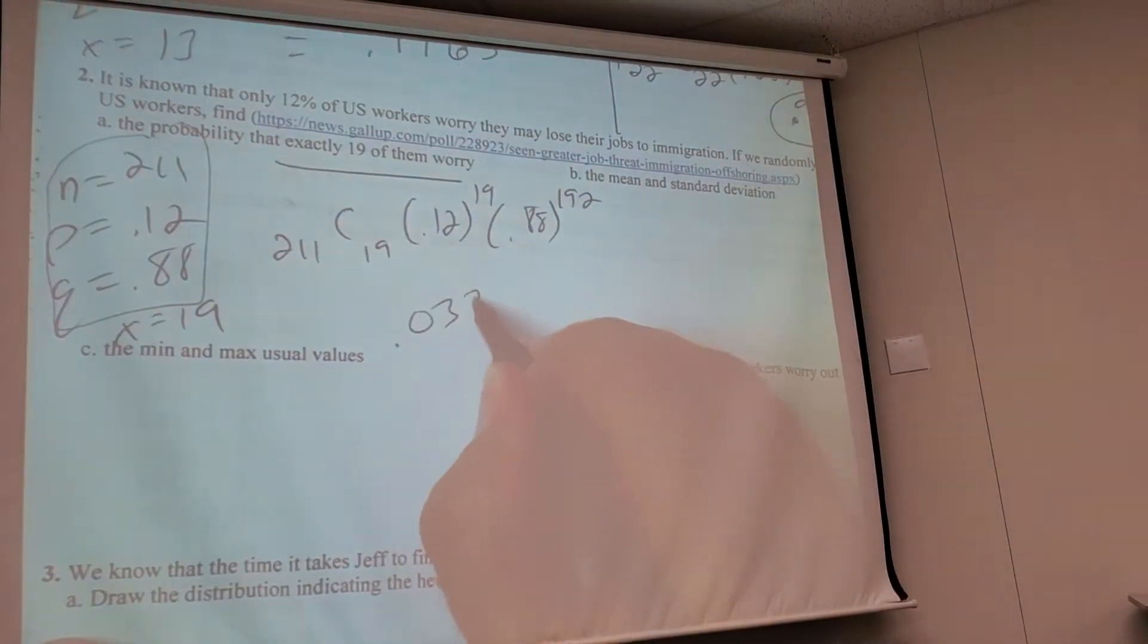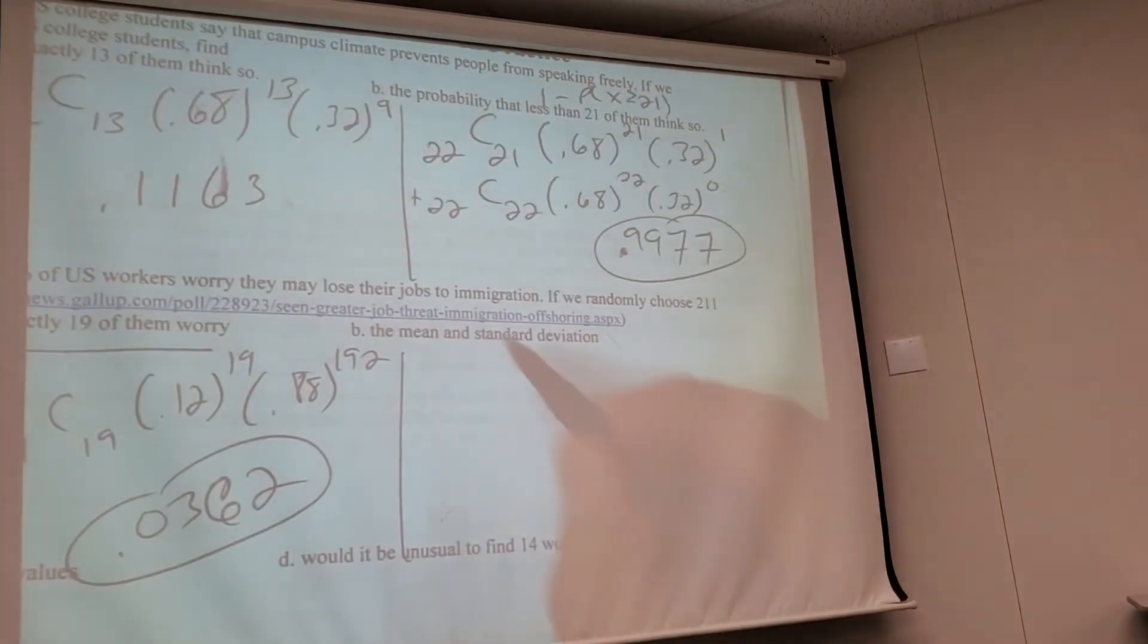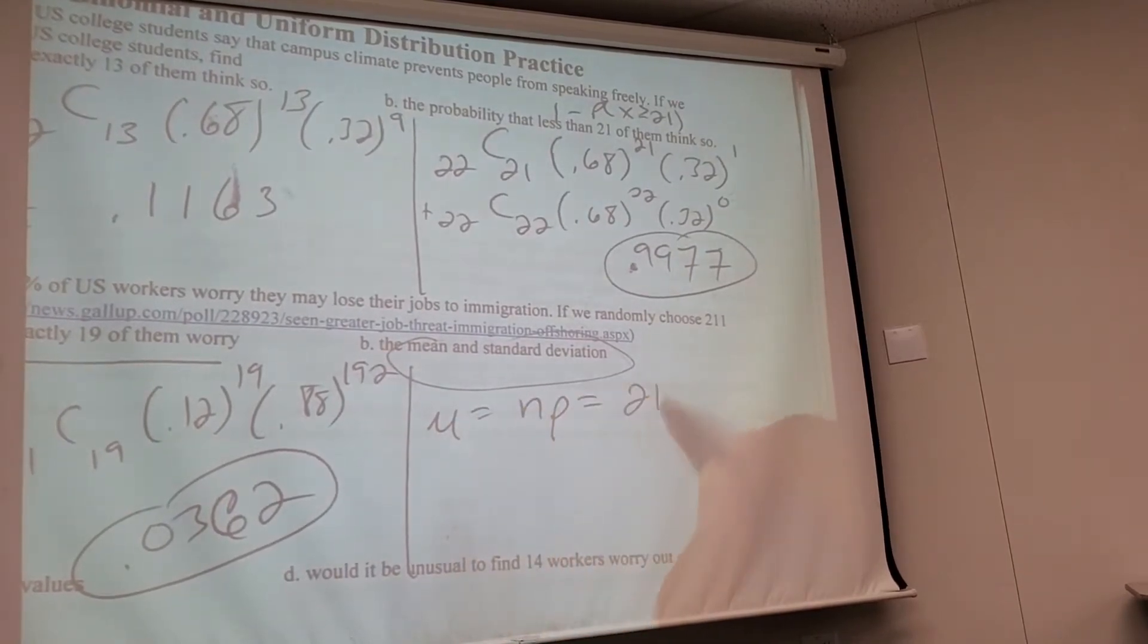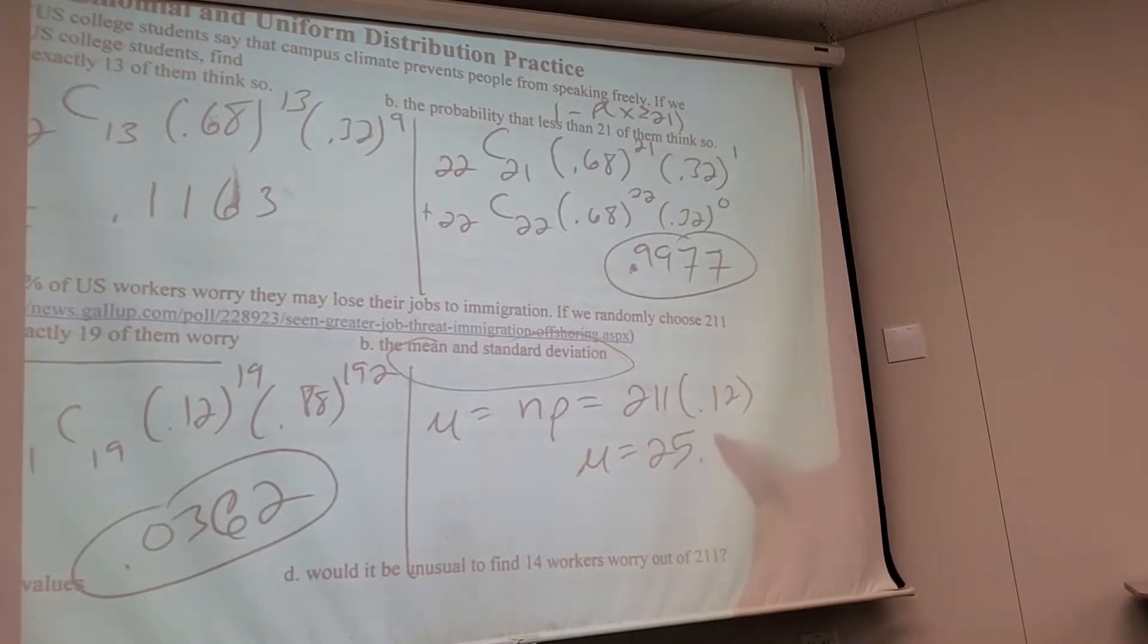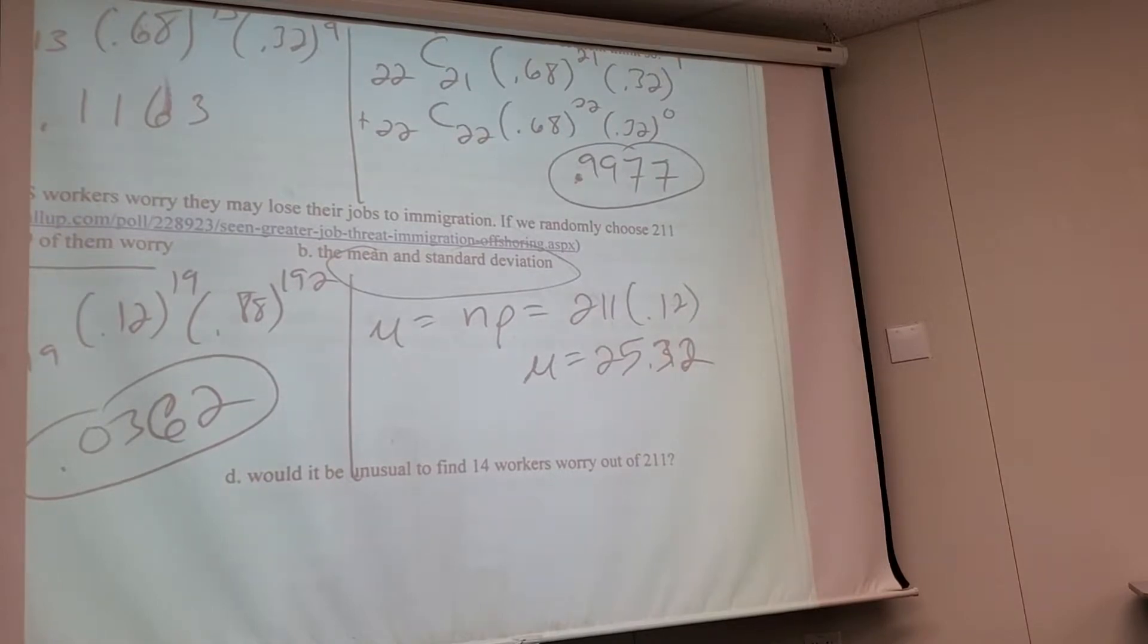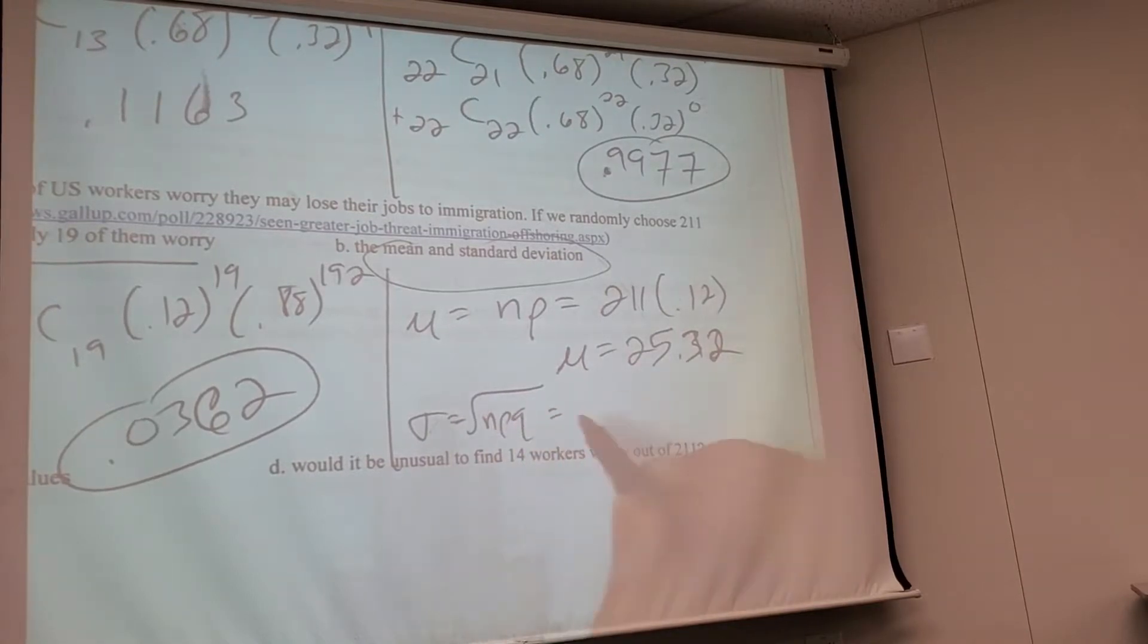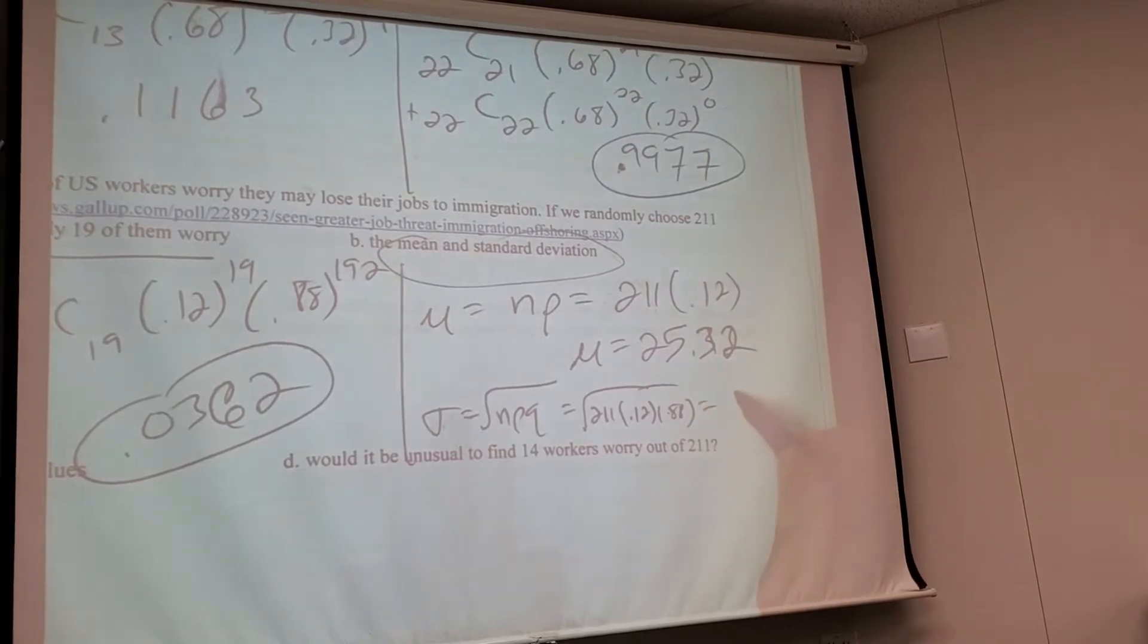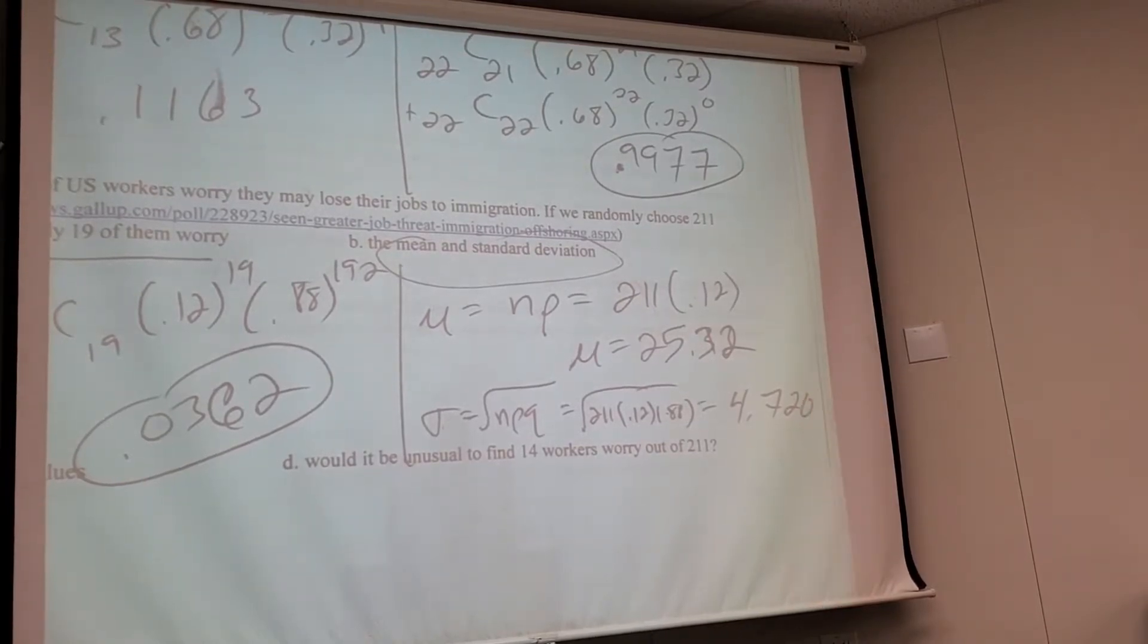This is the best formula yet for these things. What's the formula for the mean? NP. Yeah. It's 211 times 0.12. What do you guys get? 25.32. 25.32. Are we with me so far?